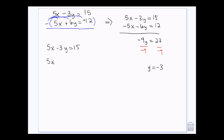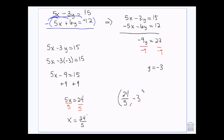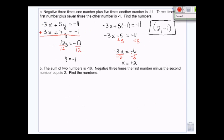So, 5X minus 3 times negative 3 equals 15. 5X minus minus 9 equals 15. 5X equals 24. Divide it by 5. And when this happens, just leave it as an improper fraction that is perfectly acceptable. 24/5 and negative 3.